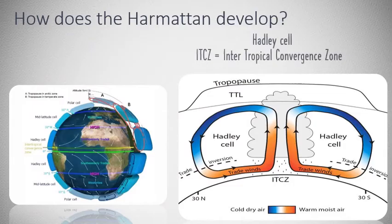So how does the harmattan develop? How is it formed — what is its origin? If you look at the Earth's wind systems, the harmattan winds are located in a Hadley cell, which is an atmospheric circulation cell in the tropics between the equator and 30 degrees north and south latitude.